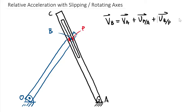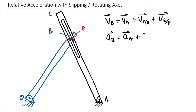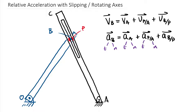What we're going to do today is write an equation using the same order and same basic subscripts, but for acceleration. In the simplest form: the acceleration of B equals the acceleration of A, plus the acceleration of P relative to A, plus the acceleration of B relative to P. That's the simplest form because each one of these terms has a tangent and a normal component. For the slipping acceleration term, we end up with three different terms: tangential, normal, and Coriolis.